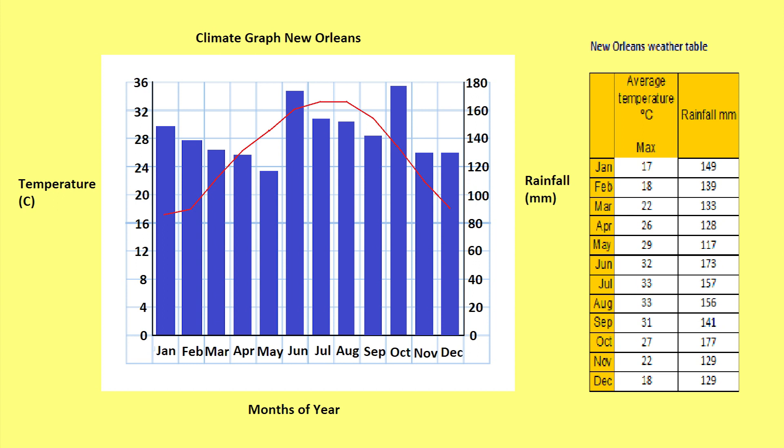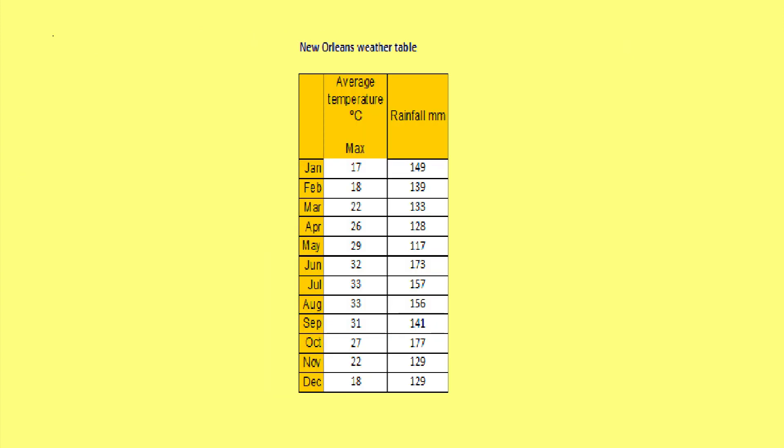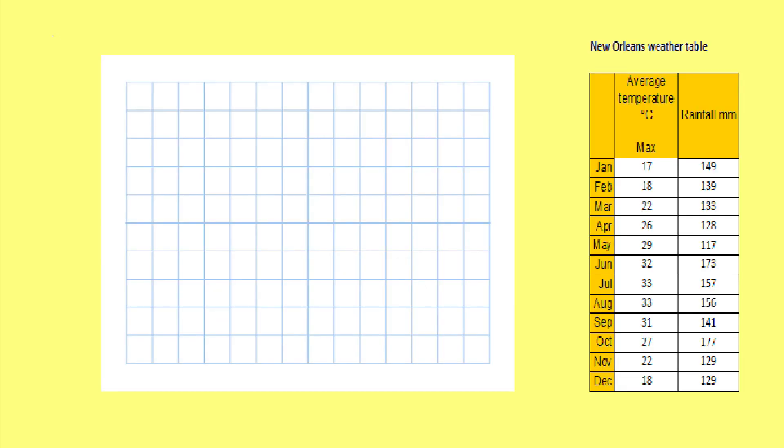Today I am going to show you how to construct a climate graph. First we need some climate data. In the table on the screen there is a data table for New Orleans in the United States. This data has maximum average temperature data measured in degrees Celsius and rainfall data measured in millimetres.